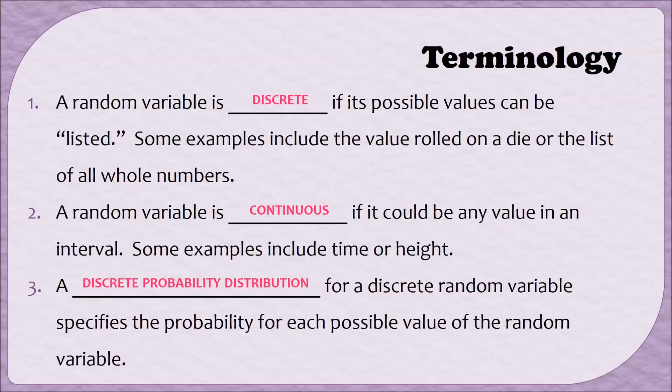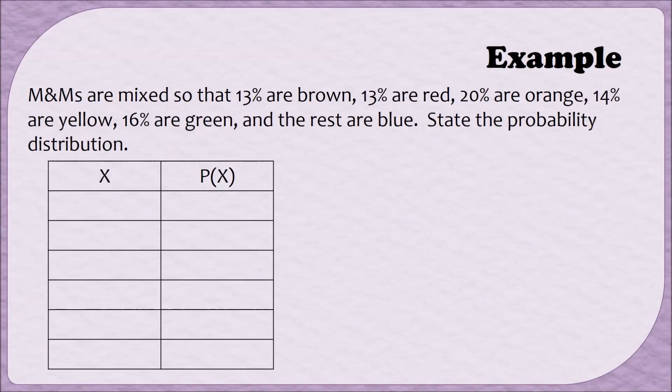Let's do an example of creating a discrete probability distribution. Suppose that M&Ms are mixed so that 13% are brown, 13% are red, 20% are orange, 14% are yellow, 16% are green, and all the rest are blue. Let's state the probability distribution. When we create a probability distribution, we're basically creating a table with two columns. In column X, we will list all of the different events that can occur. In the second column, P(X), we will list the probability of each event occurring.